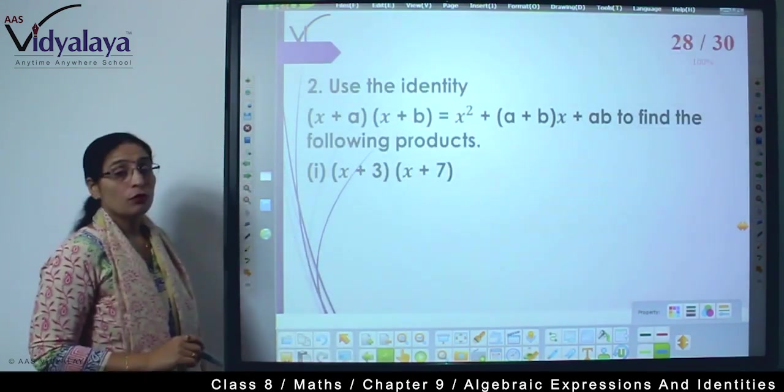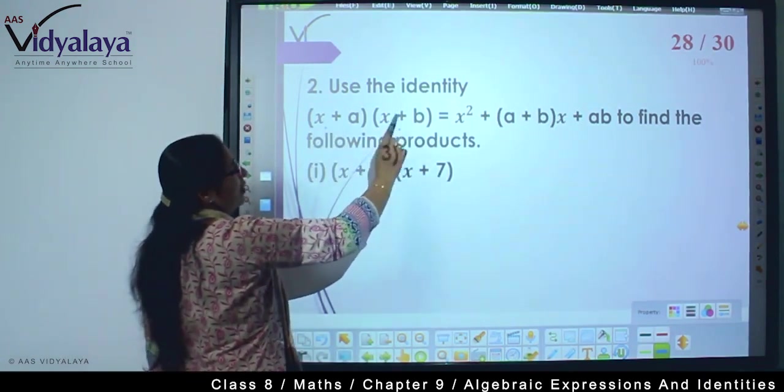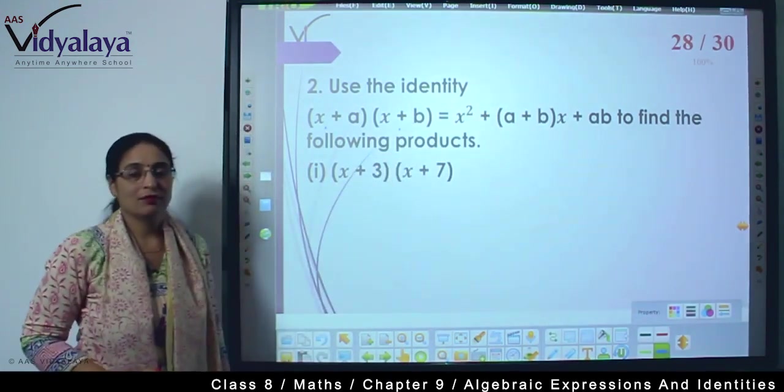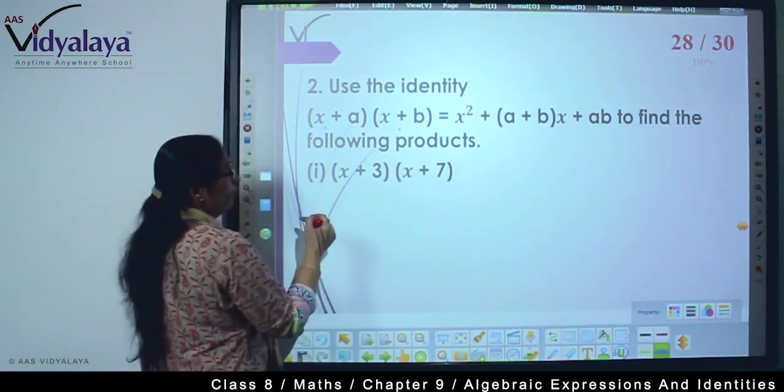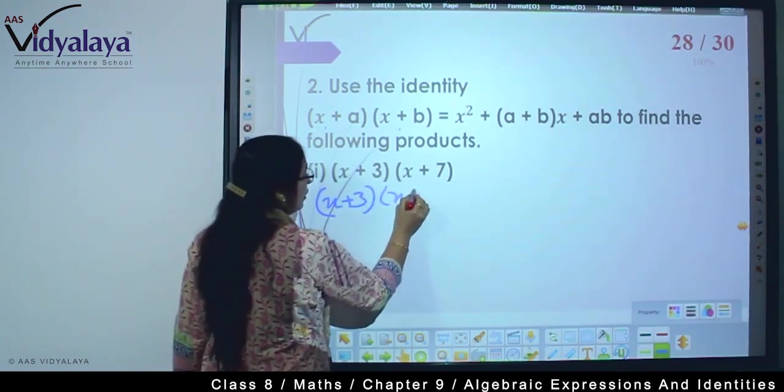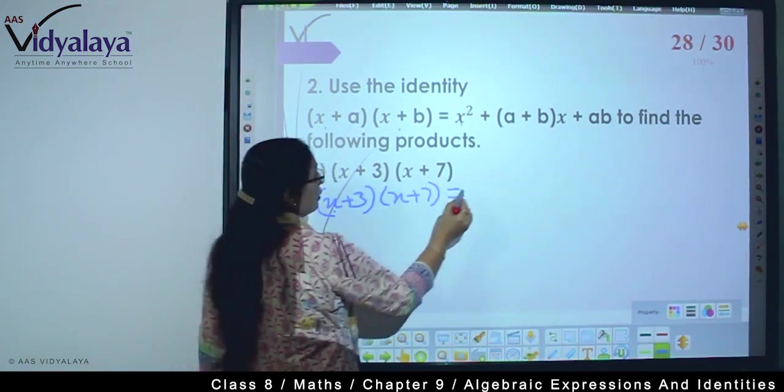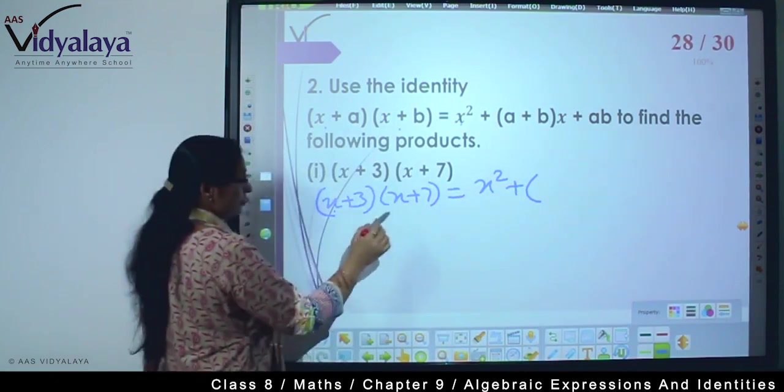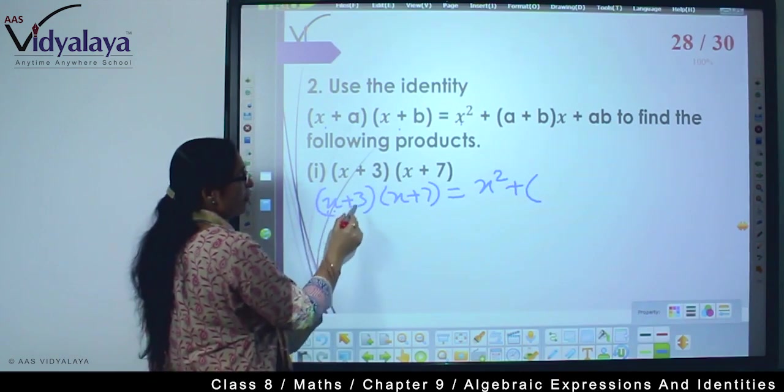Next, very interesting part: (x+a)(x+b) identity - with its help solve this question. Very interesting. Now we will follow this. So we have (x+3)(x+7), which will be equal to x². So our first variable we got is x². Plus... now a+b.